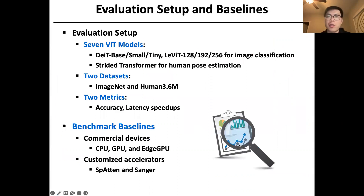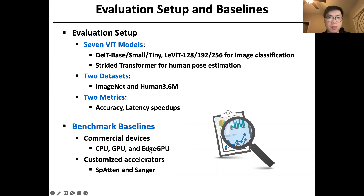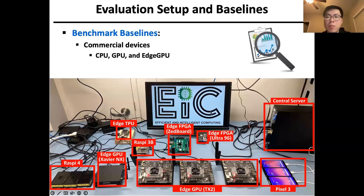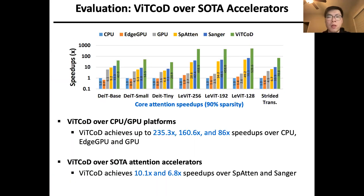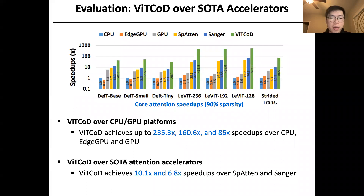Next, I will talk about the evaluations. We evaluate VIT-CoD across seven VIT models and two datasets, using both efficiency metrics and accuracy metrics. We compare VIT-CoD against state-of-the-art baselines including both commercial CPU and GPU devices, and customized accelerators like Spartan and Sanger. As compared to CPU and GPU platforms, VIT-CoD achieves up to 200× and 180× speedup. As compared to state-of-the-art attention accelerators, VIT-CoD achieves 10× and 6.8× speedup over Spartan and Sanger respectively.